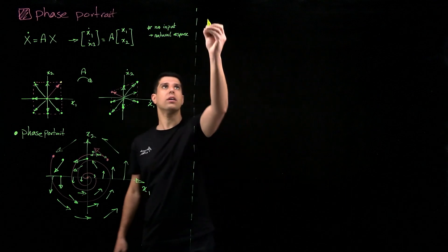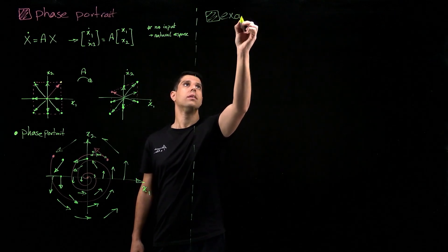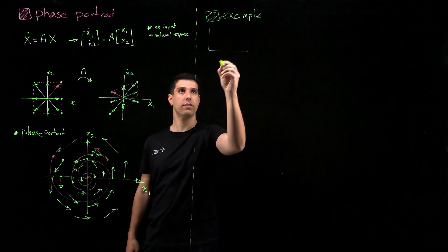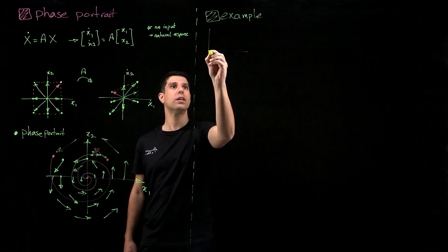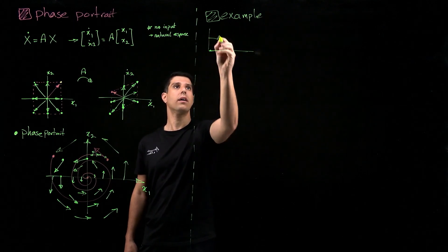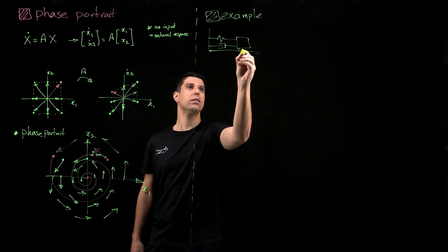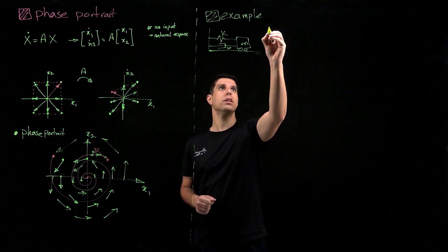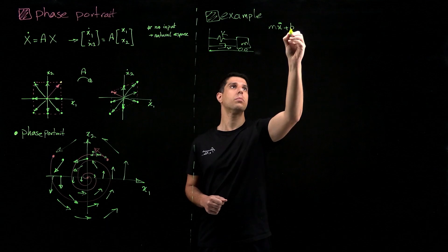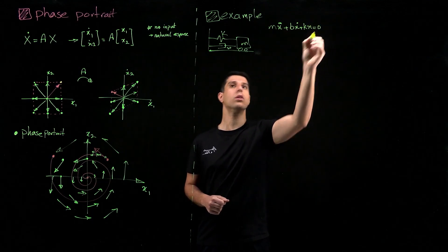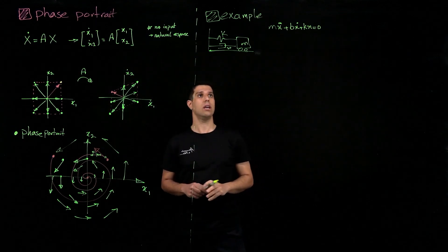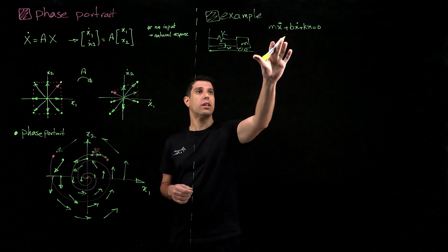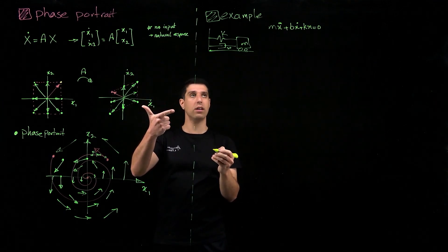Let's look at a concrete example — our classic mass-spring-damper system. We already know the equations of motion: m*y-double-dot plus b*y-dot plus k*y equals zero. There's no input, so everything here is only the natural response. To convert to state-space form, I take position y and velocity y-dot as the states, calling them x1 and x2.